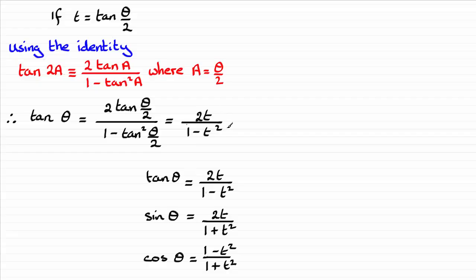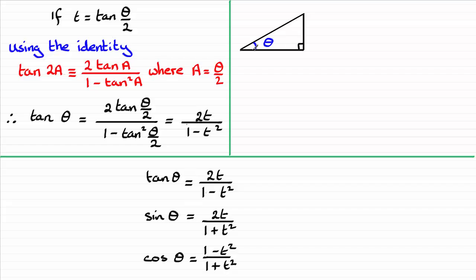And so with this result, we can take a triangle, a right angle triangle with theta in it. And because tan of the angle theta is opposite over the adjacent, then I can say that this side is 2t and this side is 1 minus t squared.